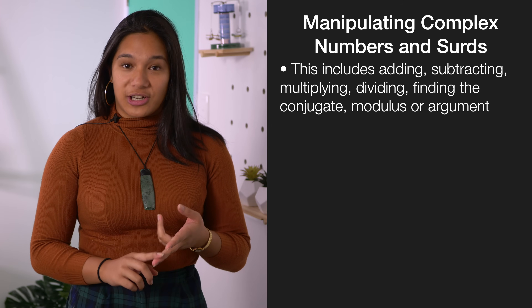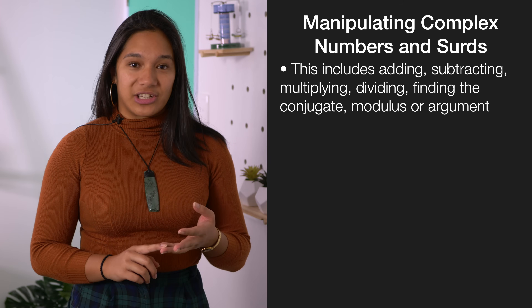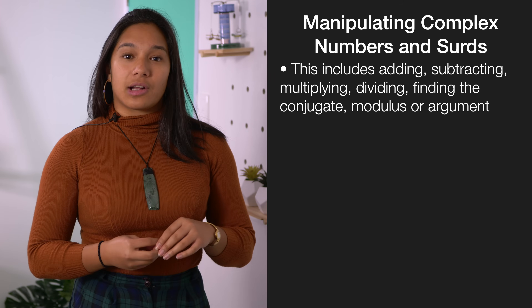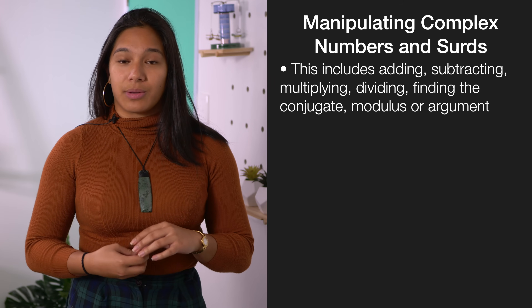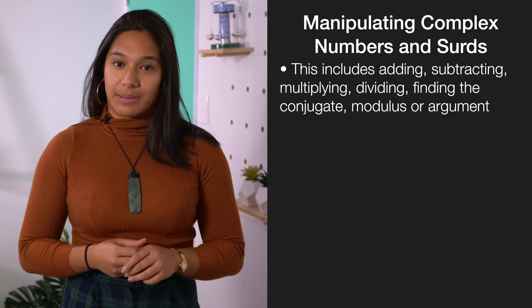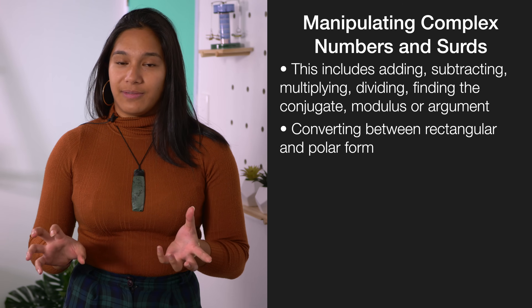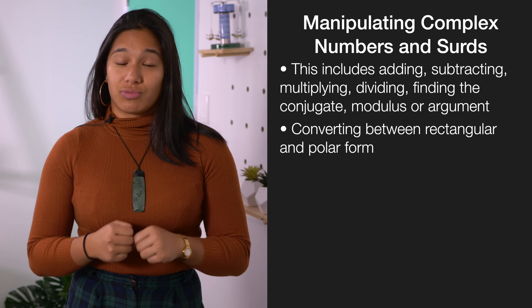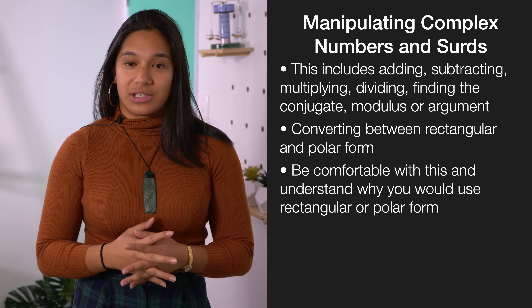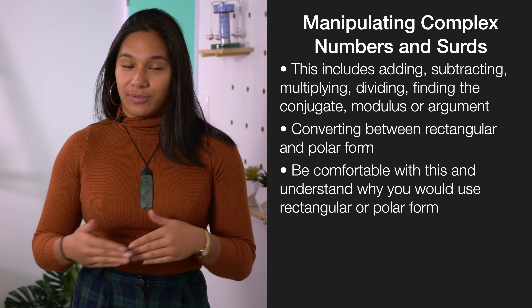The standard can be broken down into three main components. The first one is manipulating complex numbers in surds, and this can involve operations such as addition, subtraction, multiplication or division, calculating conjugates, the modulus or the argument of complex numbers, or converting between rectangular and polar form. It's really important to know when you need to use each type of form as well.